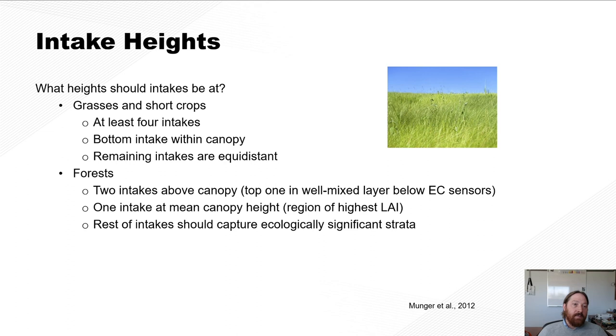So when you have something like an AP200, you have to have considerations of where you put the intakes to measure the storage. So if you have grasses and short crops, you want to have at least four intakes and have them, have the bottom intake within the canopy and the remaining intakes equidistant up to the sensor, the eddy covariance sensor. For forests, you want two intakes above the canopy, one top one in the well-mixed layer below the EC and then one intake at mean canopy height and the rest capturing ecologically significant strata. Okay? And this is all taken from Munger et al. 2012.